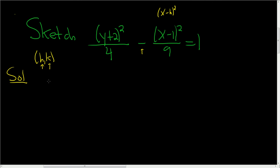So h is 1. And then here, this is supposed to be y minus k squared, so k is negative 2. Really easy trick is you just switch the signs. There's a negative 1, you put a positive 1. There's a positive 2, you put a negative 2. So this is the center.